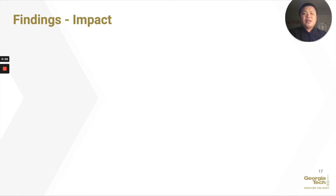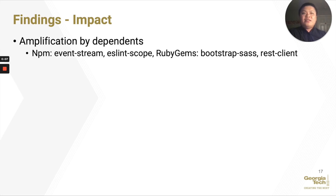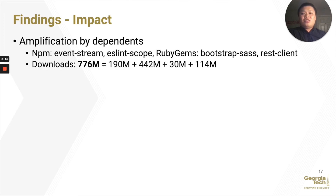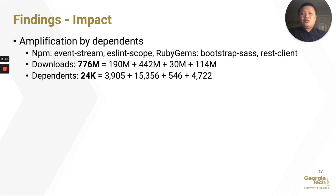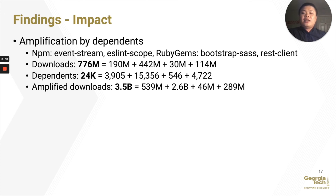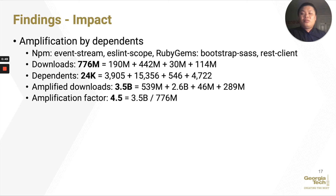In addition to downloads, we want to show the broader impact of these malware — amplified by their dependents. Taking the four most popular malware as an example: their own downloads sum to 700 million, but they are depended upon by 24,000 packages. If we count all dependent packages as well, we get a download count of 3.5 billion. This implies an amplification factor of 4.5 by dependents. This shows that the difference between supply chain attacks on package managers versus attacks on mobile stores is that packages in package managers can be amplified by their dependents.